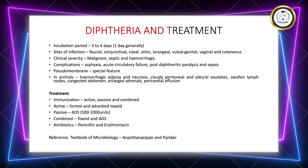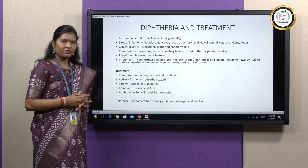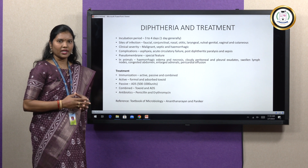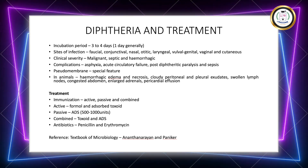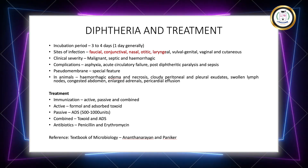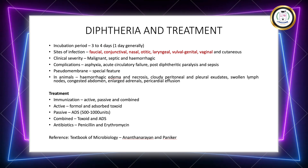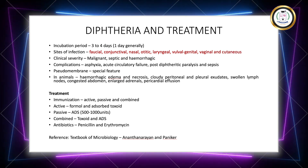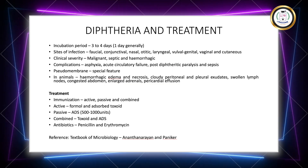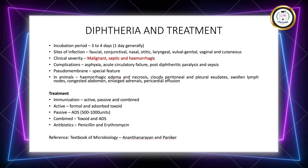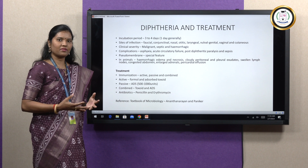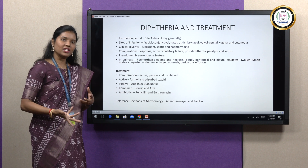Coming to the disease diphtheria and its treatment: the incubation period is around 3 to 4 days, but on average it is just 1 day. Sites of infection include fascial, facial muscles, conjunctival, nasal, otic, laryngeal, vulval, vaginal, cutaneous, and genital regions. Based on clinical severity, diphtheria is classified into three types: malignant, septic, and hemorrhagic. Faucial diphtheria is the most common type, which starts with mild catarrhal inflammation that becomes widespread later on — catarrhal inflammation meaning the lining of the mucous membrane becoming inflamed or infected.